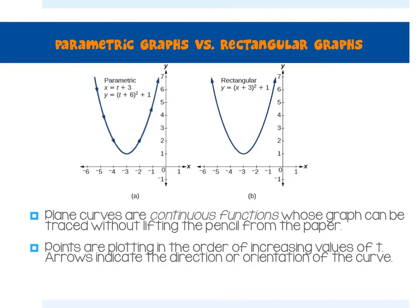Both of these graphs look pretty similar, but we're going to talk about the difference between them. The left is parametric, the right is rectangular. Rectangular is what we know — the X's and Y's, the parabolas, the ellipses, the hyperbolas — all those things are rectangular, on your X-Y axis. The parametric is actually two different equations graphed, and we're going to do a T chart first to graph those.